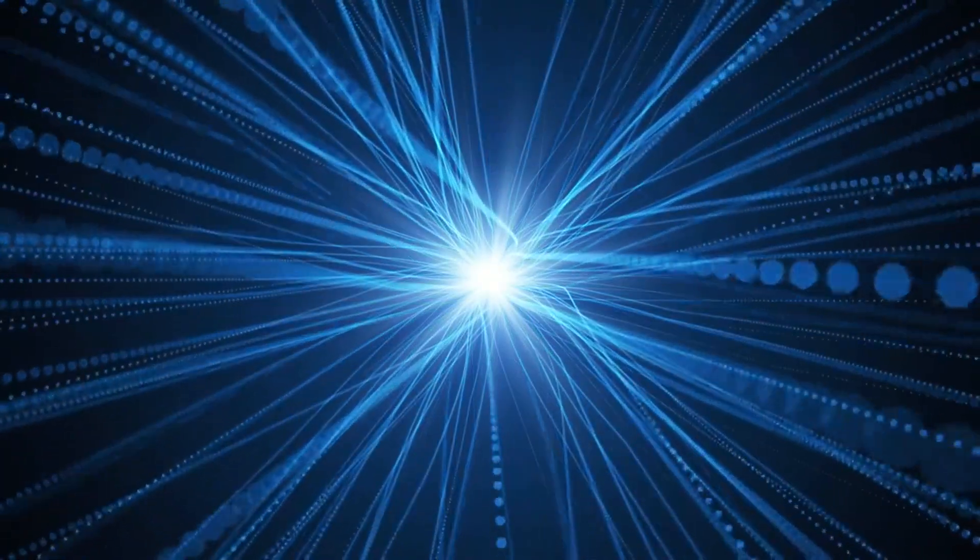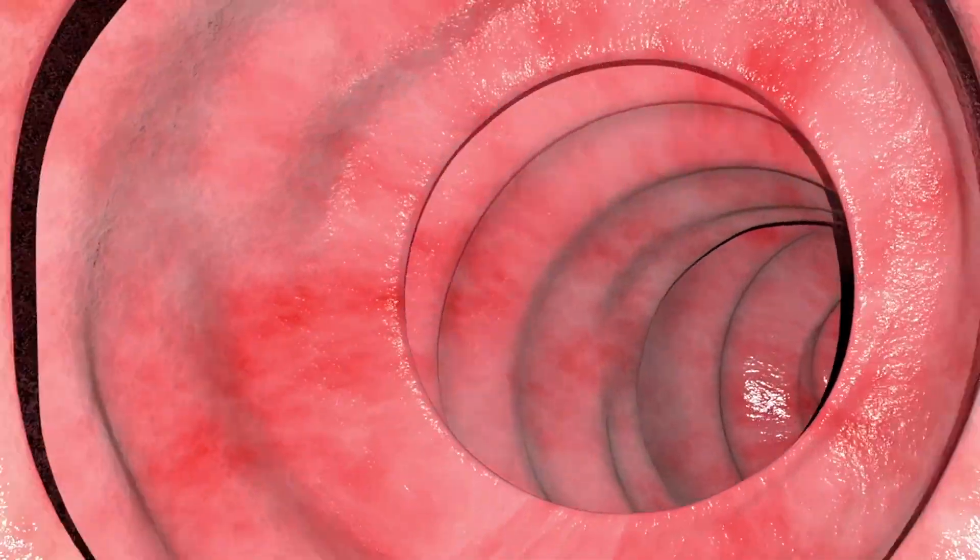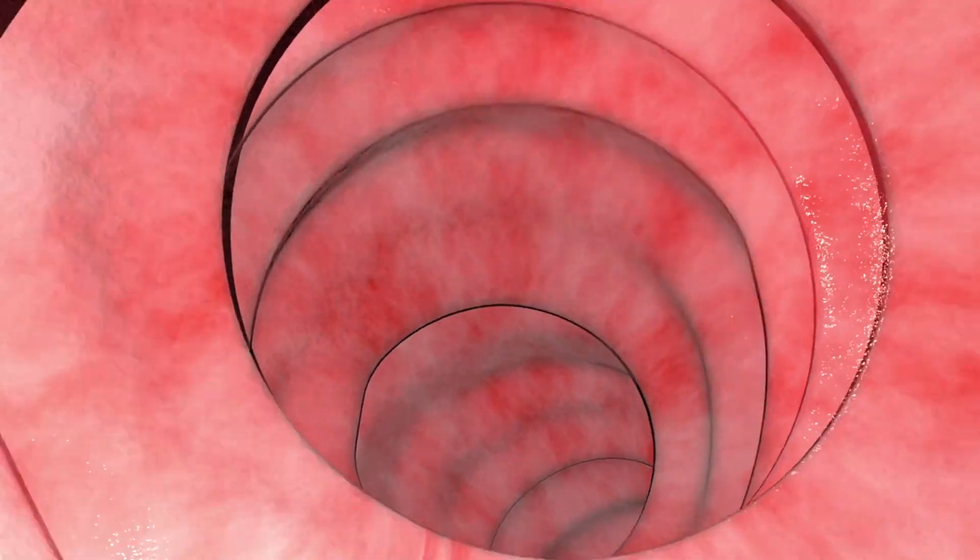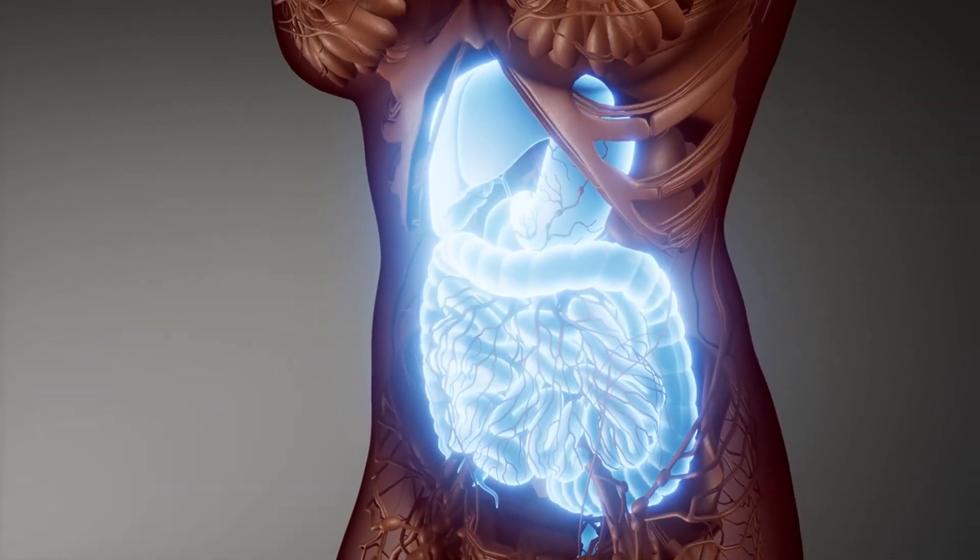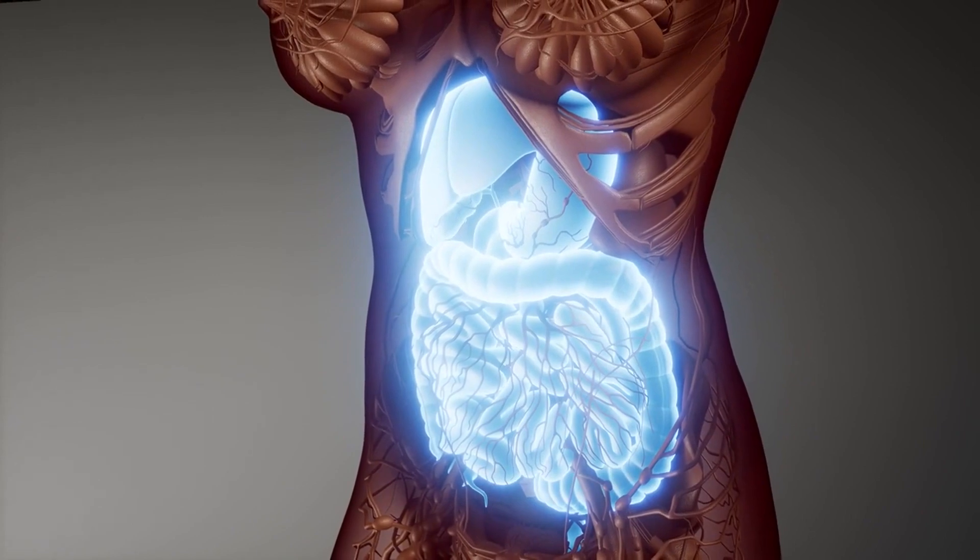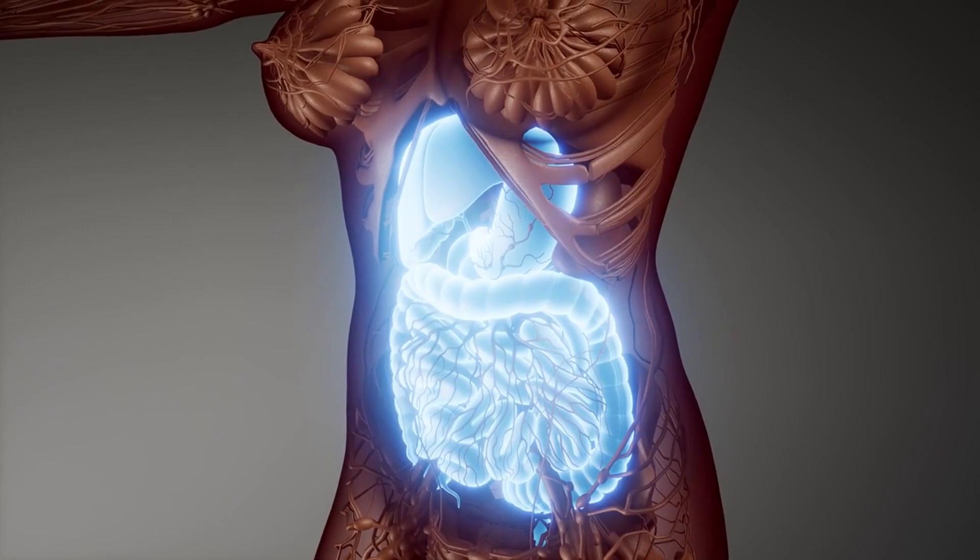The Gut-Brain Axis, a communication marvel. The Gut-Brain Axis is an intricate and highly sophisticated communication highway that connects our gastrointestinal system with our brain. This remarkable axis allows for constant dialogue between the two organs, influencing not only our digestive functions but also our emotions, cognitive abilities, and overall well-being.